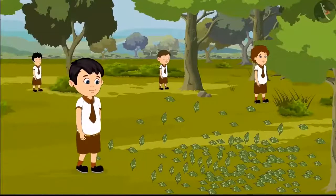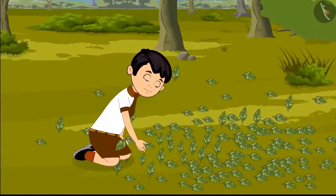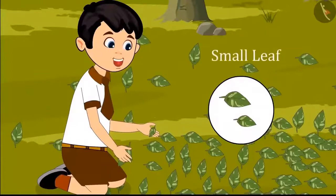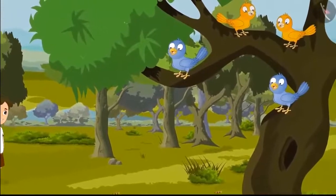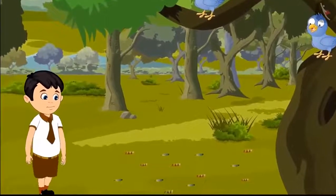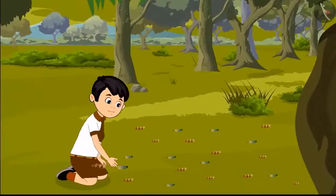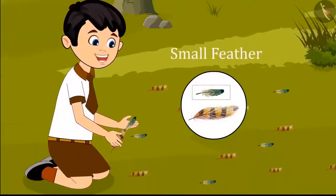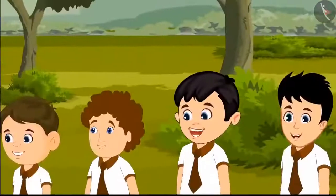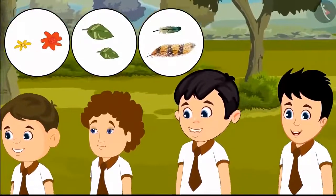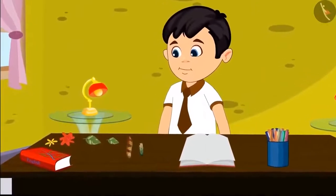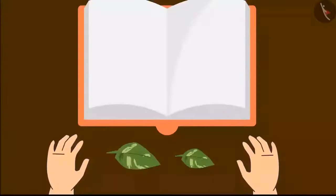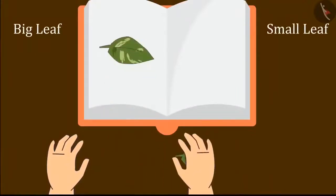After going a little further, Chotu saw fallen leaves and picked up two — one big leaf and one small leaf. While walking, he found a tree with lots of birds sitting on it and many fallen feathers underneath. He thought to lift two feathers: 'I will take one small feather and one big feather.' Chotu collected his flowers, leaves, and bird feathers, then went home to stick them in his notebook. He pasted the big leaf and small leaf, the small flower and big flower, and identified the small and big feathers.